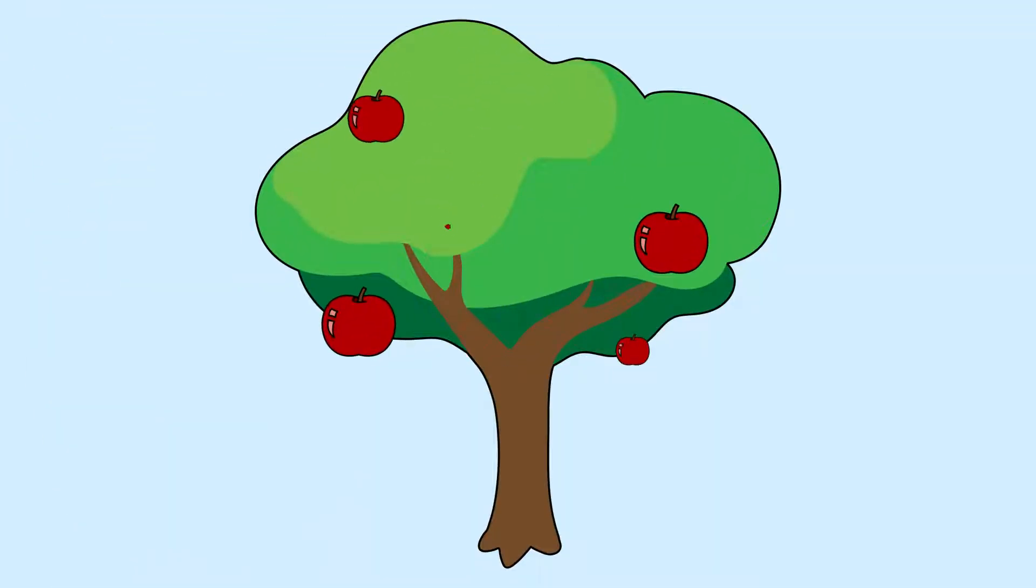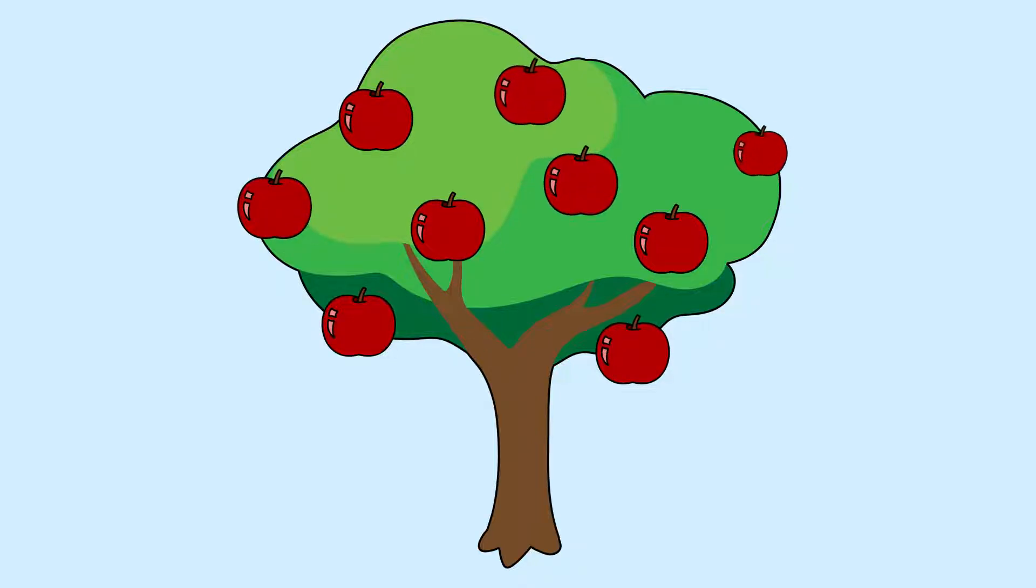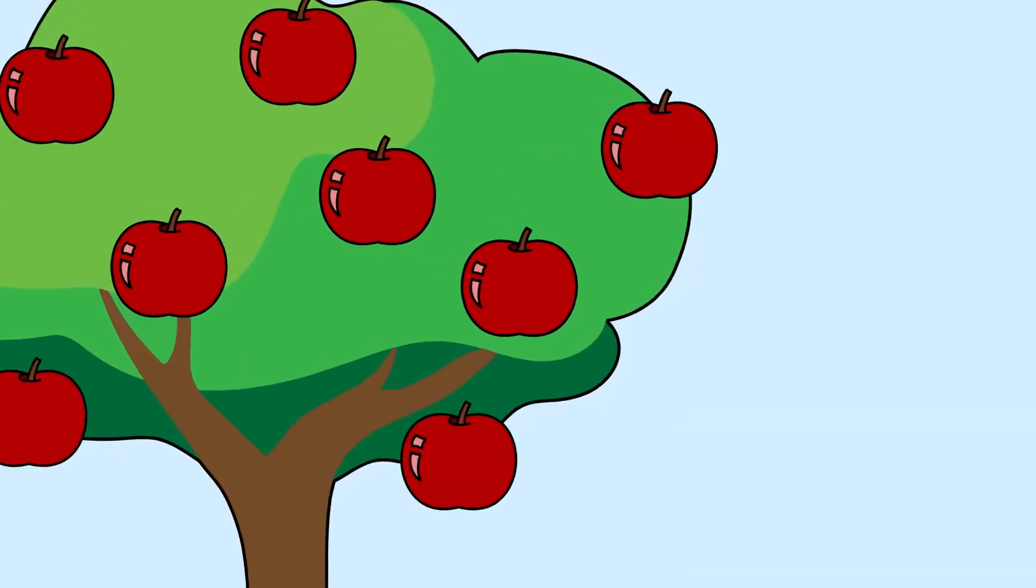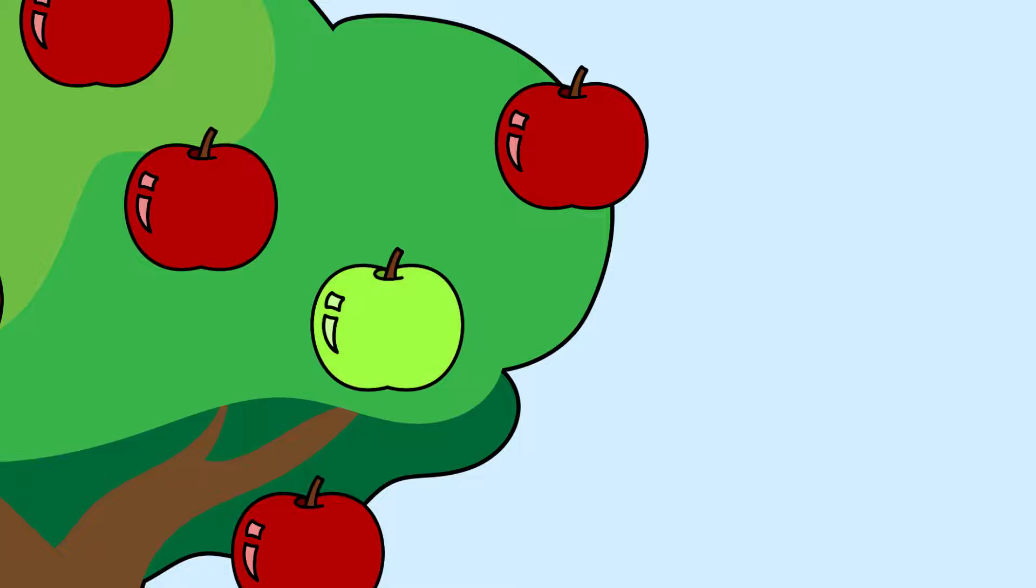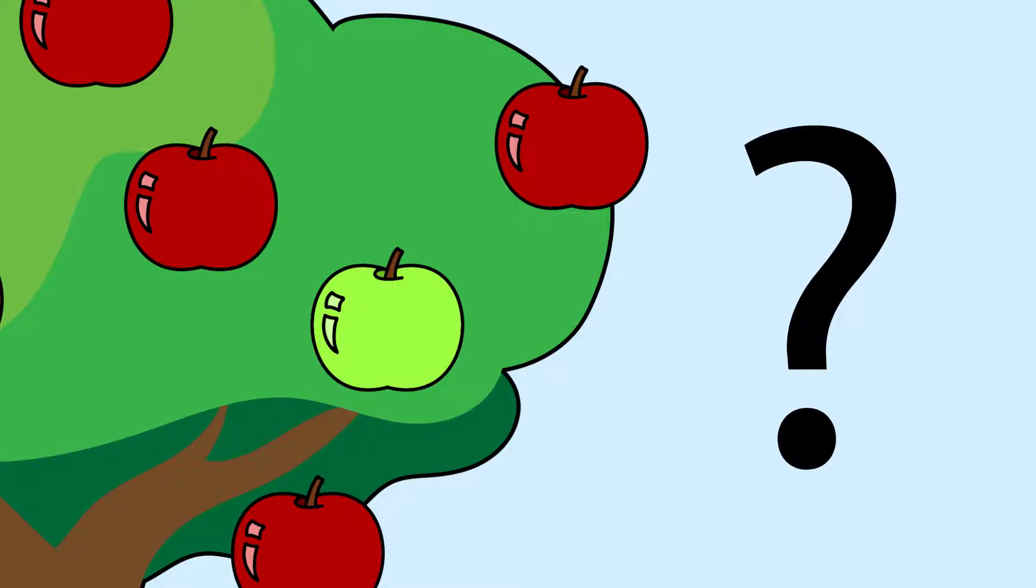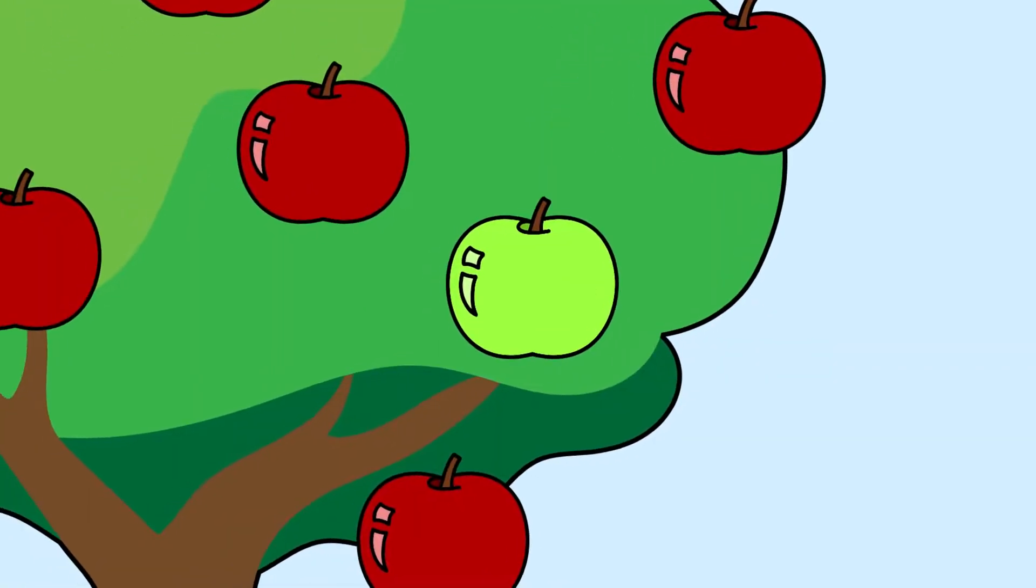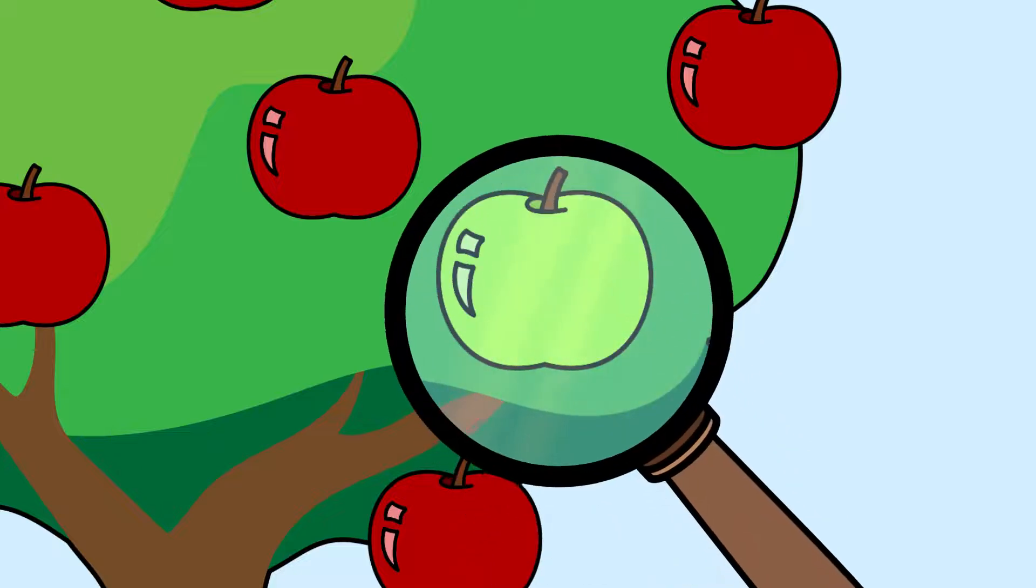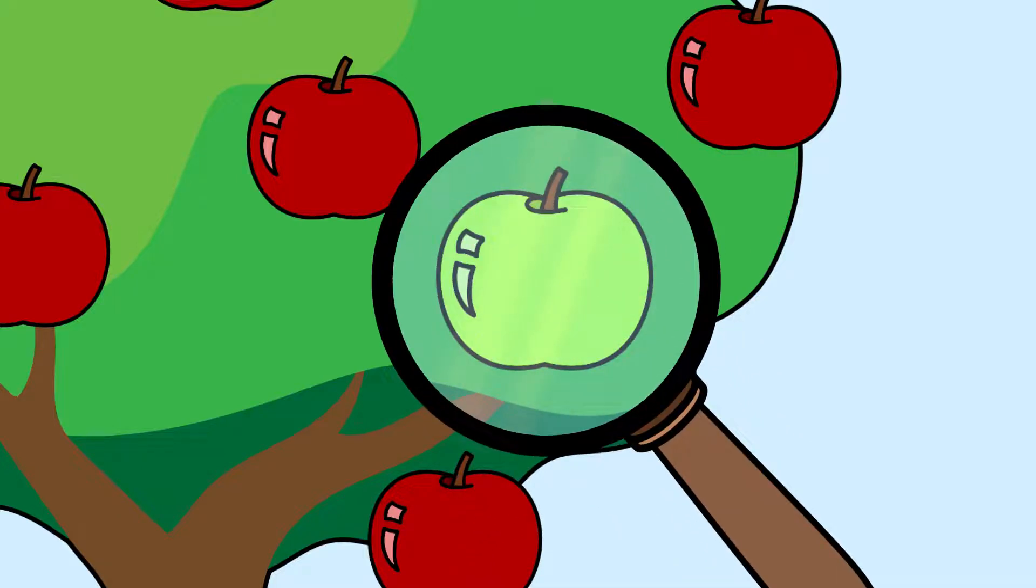For example, imagine a tree with red apples on it. One day, one of the apples turns green and you want to know what caused it to change colour. You would probably start by inspecting the apple that changed colour, not by inspecting the apples that are still red.